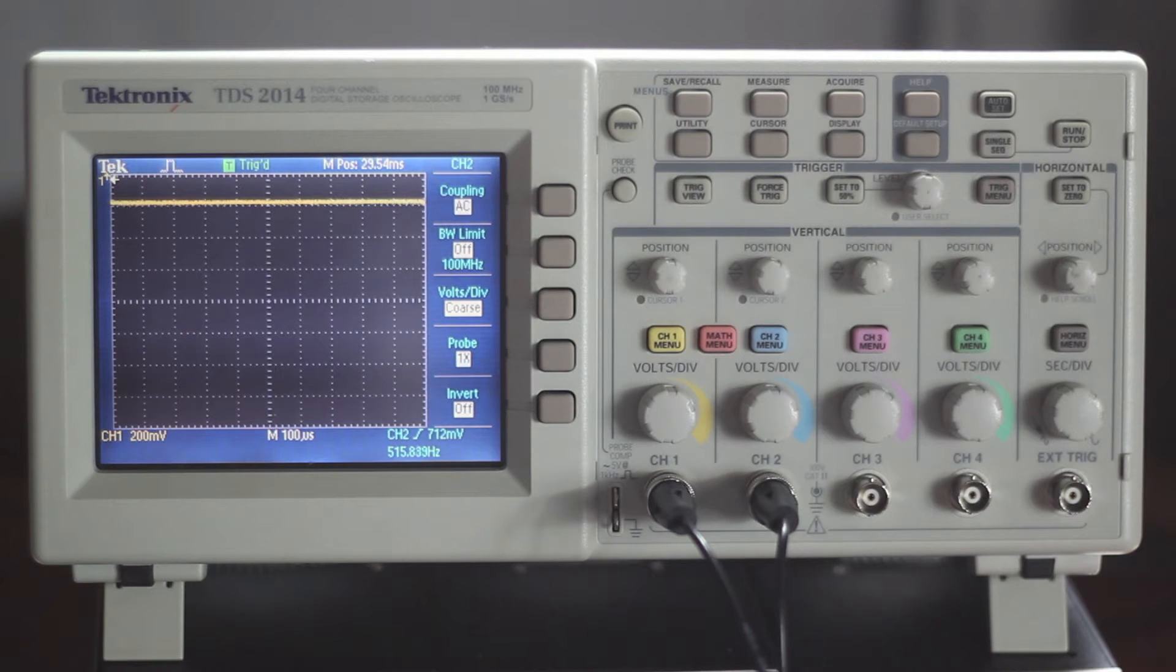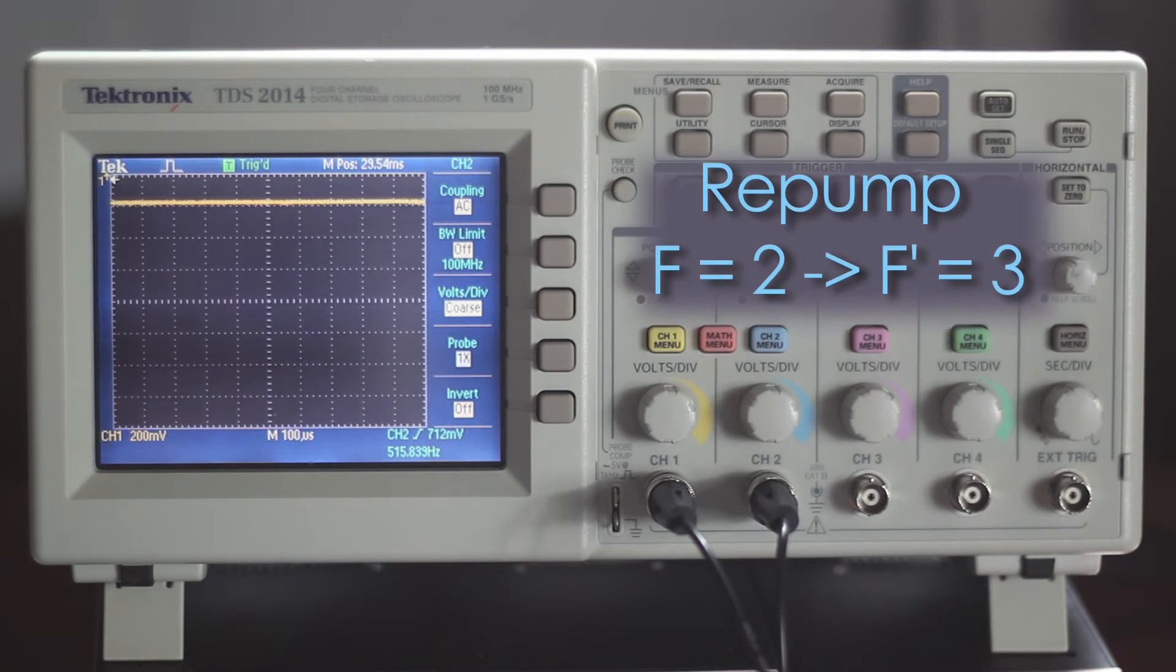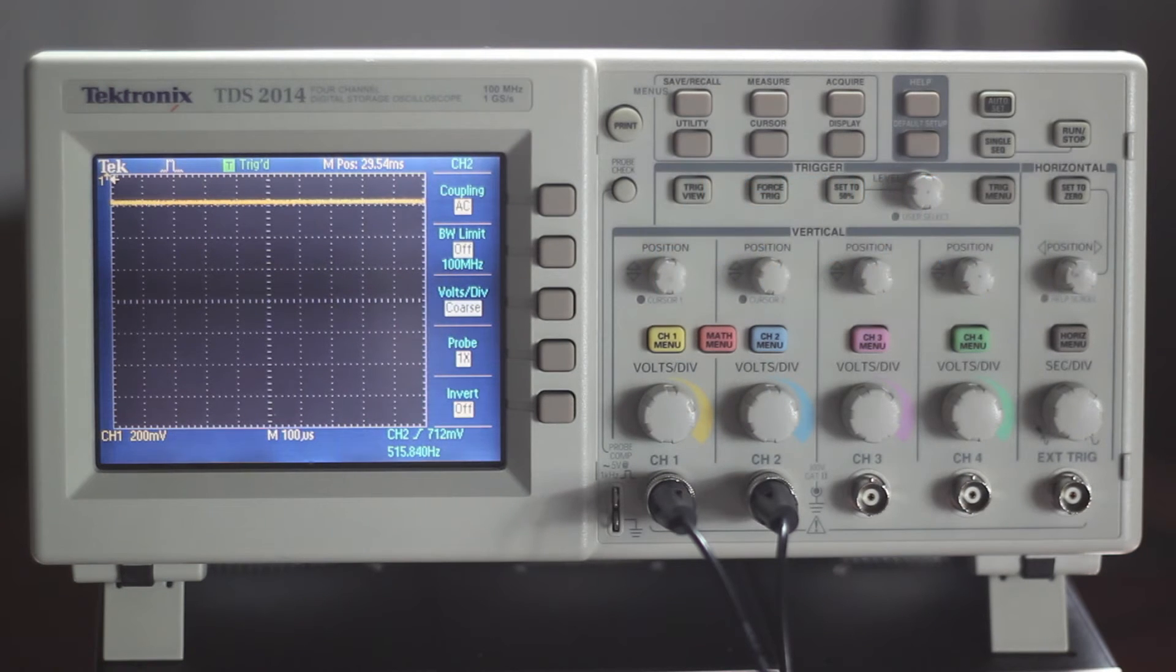Typically you need two frequencies of light to produce a MOT, cooling light and repump light. Today we are using a single laser to generate both frequencies by modulating the laser diode at about 3.1 gigahertz to generate a sideband at the frequency of the repump transition.